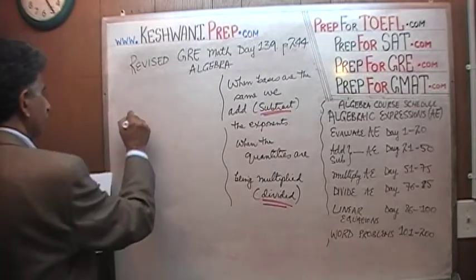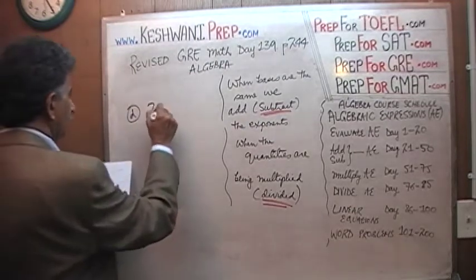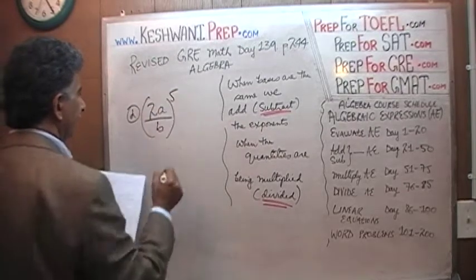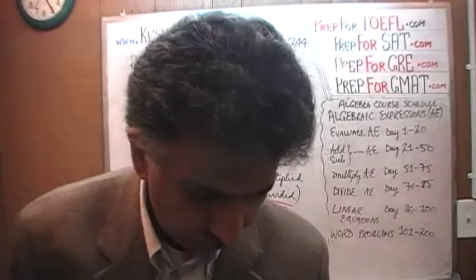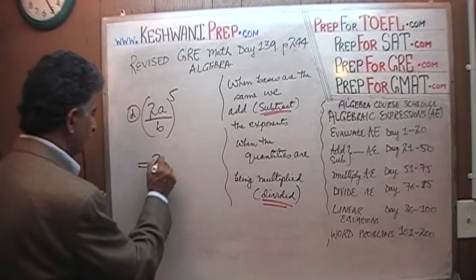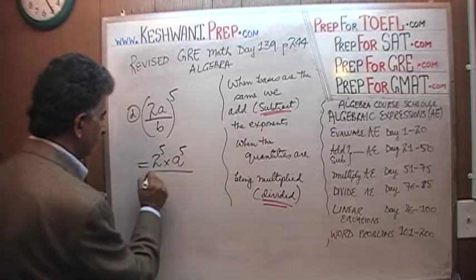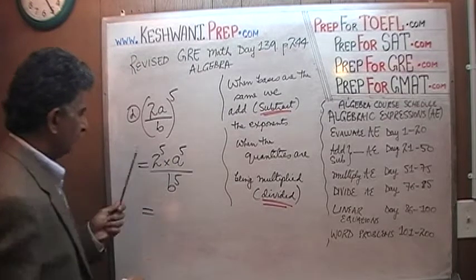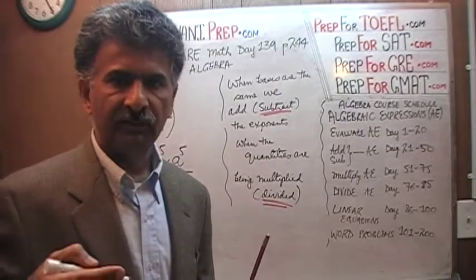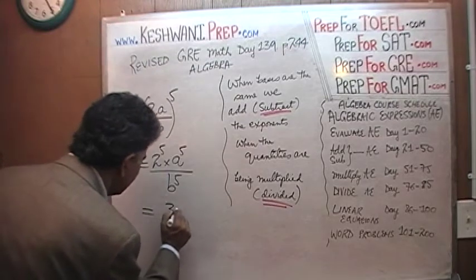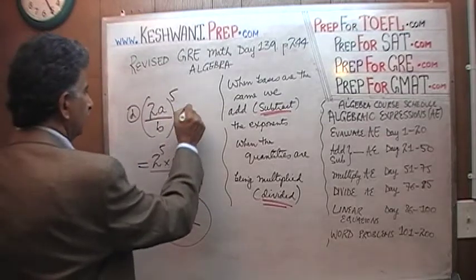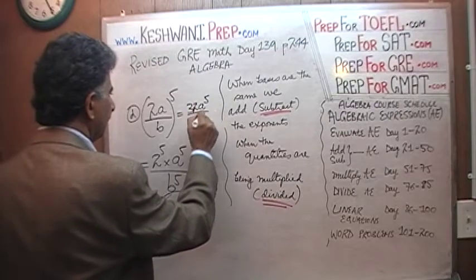Part D: 2 times A over B, the whole thing raised to 5. Since everything is different — this is A, this is 2, this is B — this is basically the same as 2 raised to 5 times A raised to 5 over B raised to 5. If you like, you can figure out 2 raised to 5: 2×2=4, 4×2=8, 8×2=16, 16×2=32. So the answer is 32A raised to 5 over B raised to 5.